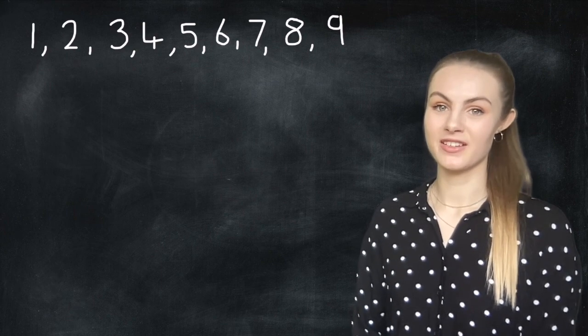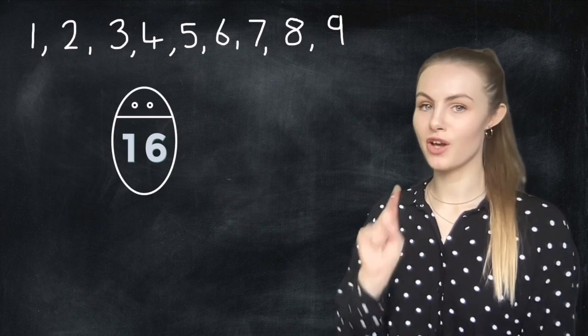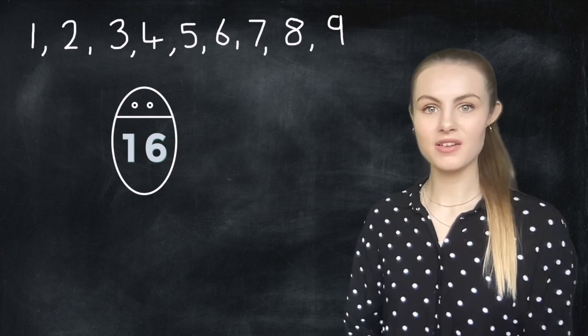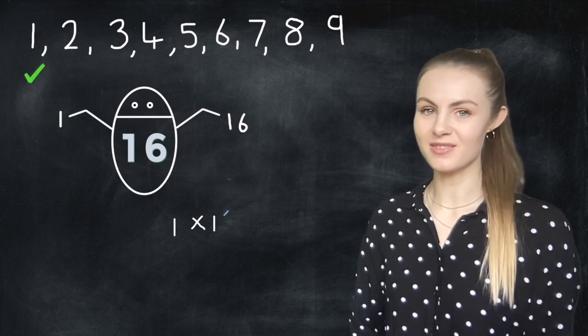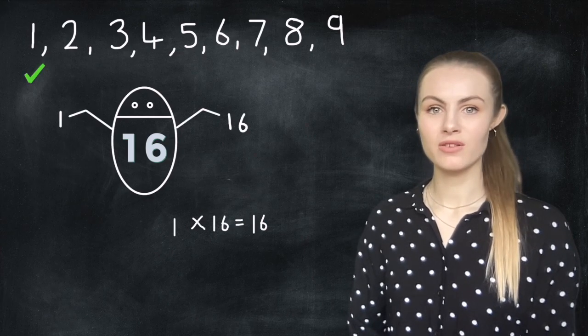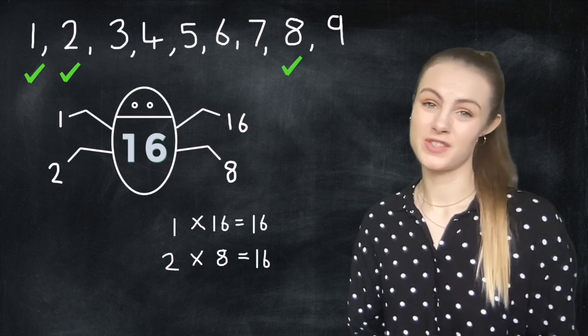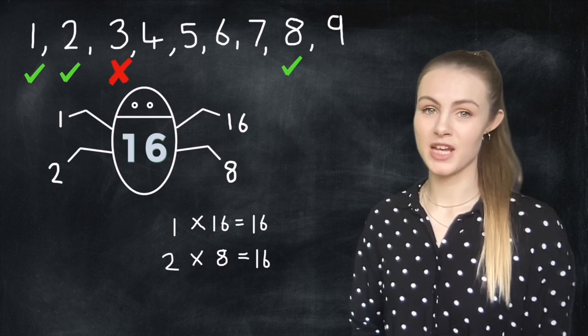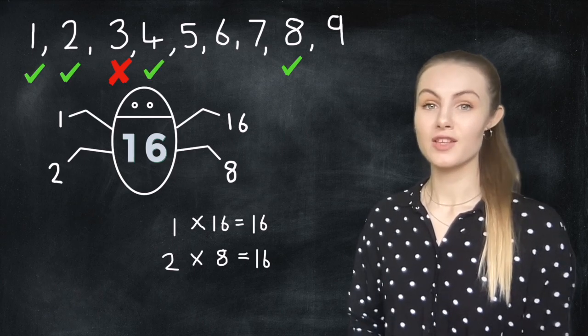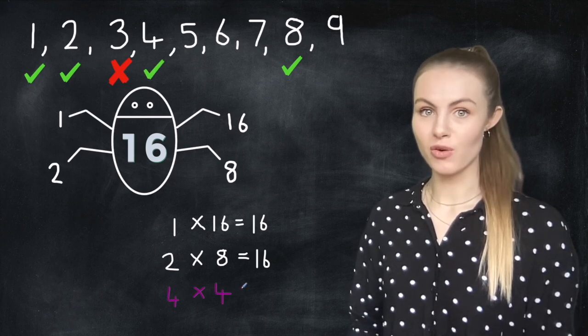Let's look at another example together. 16. So using our 1, 2, 3 method let's get started. Well we've got 1 and 16. We've got 2 and 8. 3 is not a factor of 16 because 16 is not in the 3 times table. But 4 is. It's 4 multiplied by 4 gives you 16.